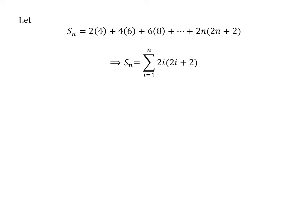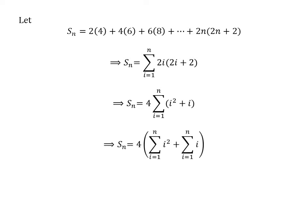Taking the common factor out, we get S_n equal to 4 times sigma, i from 1 to n, of i times (i plus 1). Expanding the expression gives S_n equal to 4 times the sum of squares of i plus 4 times the sum of i, for i from 1 to n. That is, 4 times the sum of squares of the first n natural numbers plus 4 times the sum of the first n natural numbers.